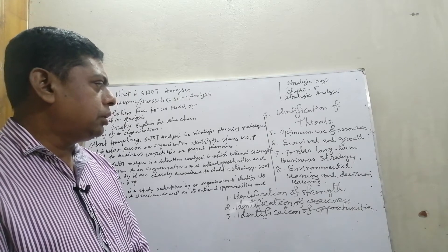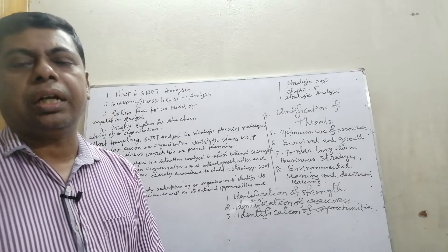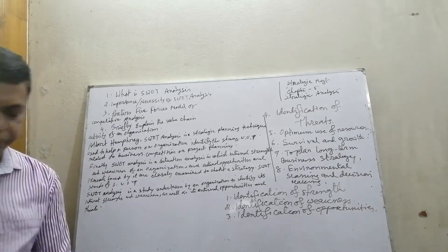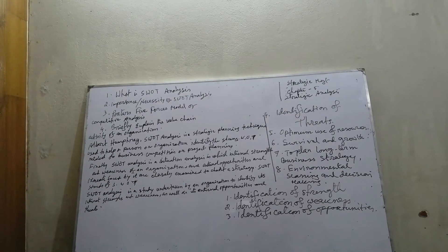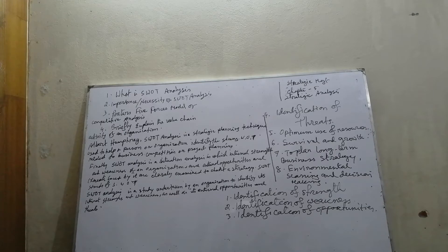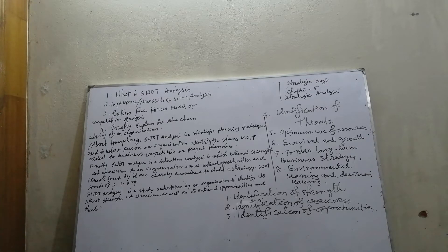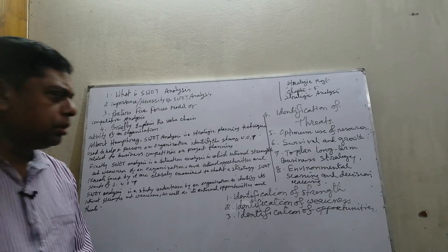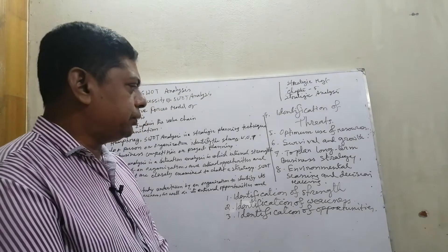To plan long-term business strategy: a business organization has both short-term and long-term objectives. Proper analysis of environmental factors helps the firm to frame plans and policies that could help in the easy accomplishment of those organizational objectives. Without undertaking SWOT analysis, the firm cannot develop a strategy for business success.